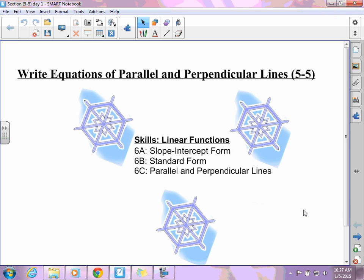Today what we're going to do is 6C standard, the parallel and perpendicular lines. A lot of the things we've already done, we've done slope intercept form, so we're going to be using that today. We're getting kind of to the end of our chapter, so this is the last new section for our chapter.